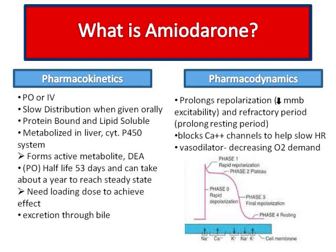Amiodarone can be given by mouth or IV. Amiodarone is highly protein-bound, which is why distribution is so slow. Amiodarone is also lipid-soluble, which contributes to the drug being highly toxic. It allows the drug to concentrate itself in cell membranes, including the liver, heart, and fat cells.